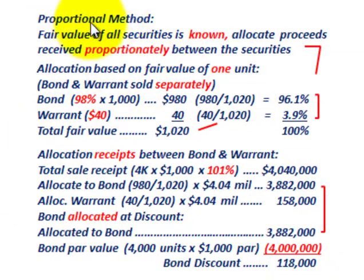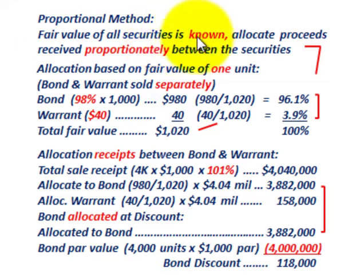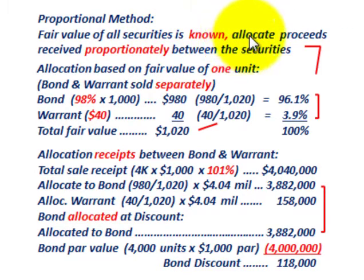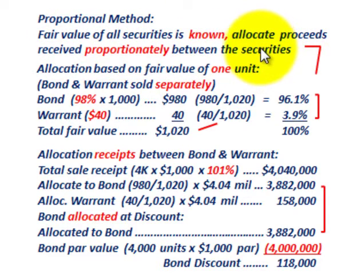For the proportional method, we use it because we know the fair value of all the securities — that is, we know the value when they're sold separately. Knowing that, you can allocate the proceeds received proportionately between the securities.